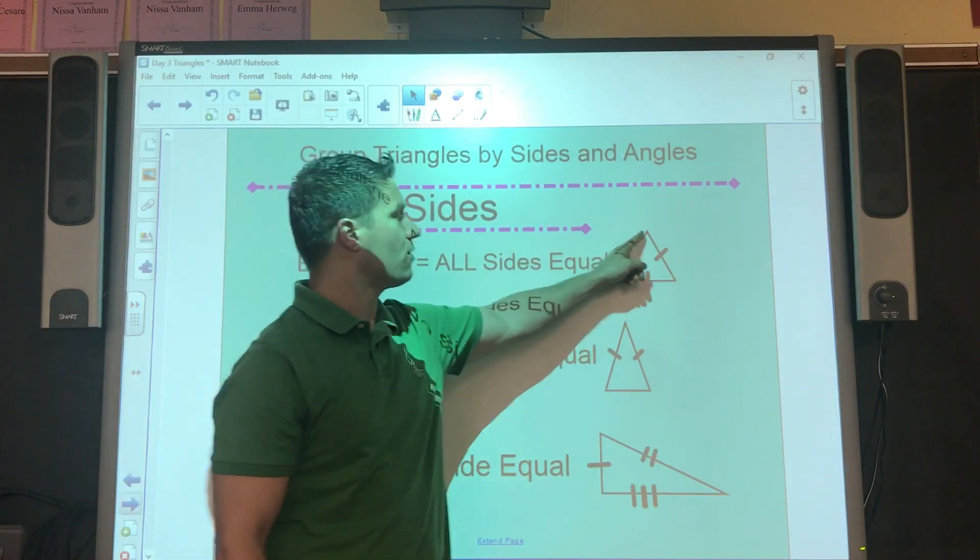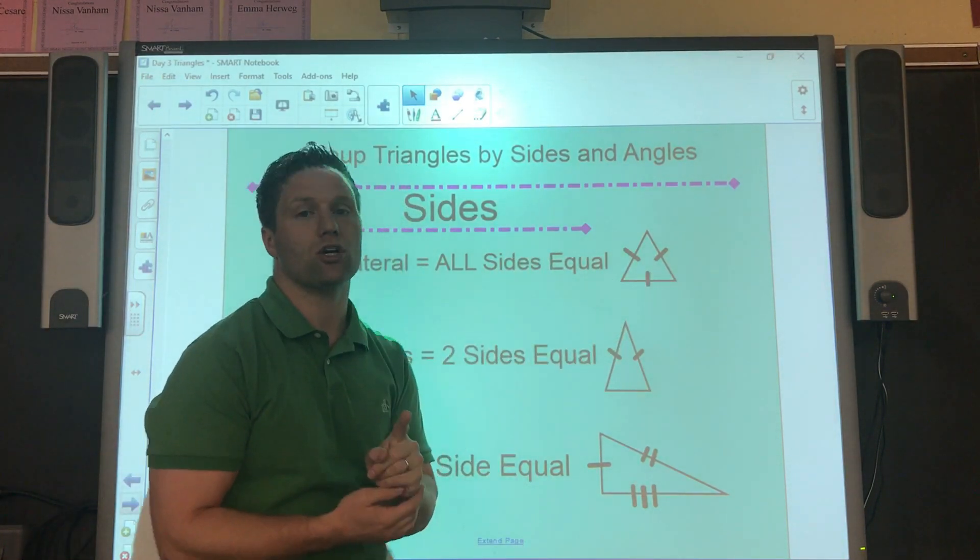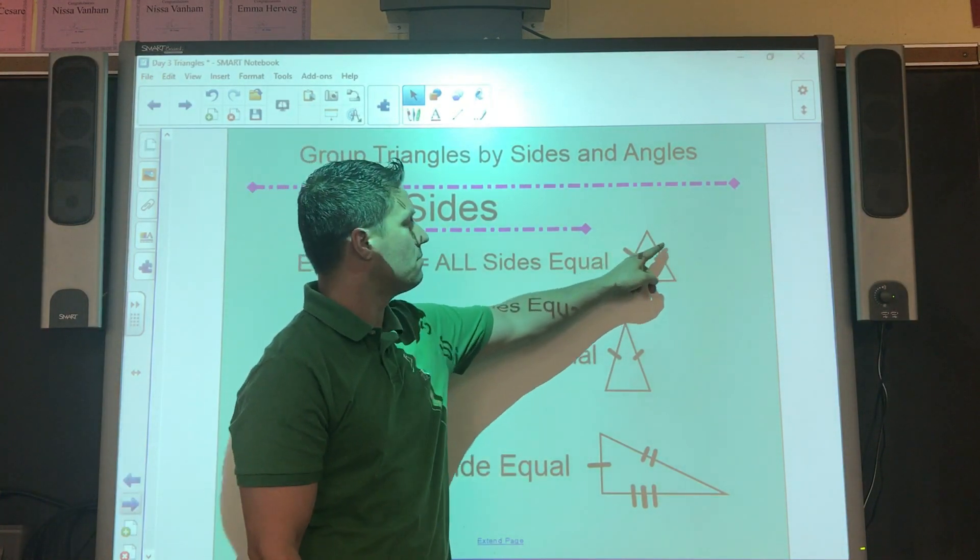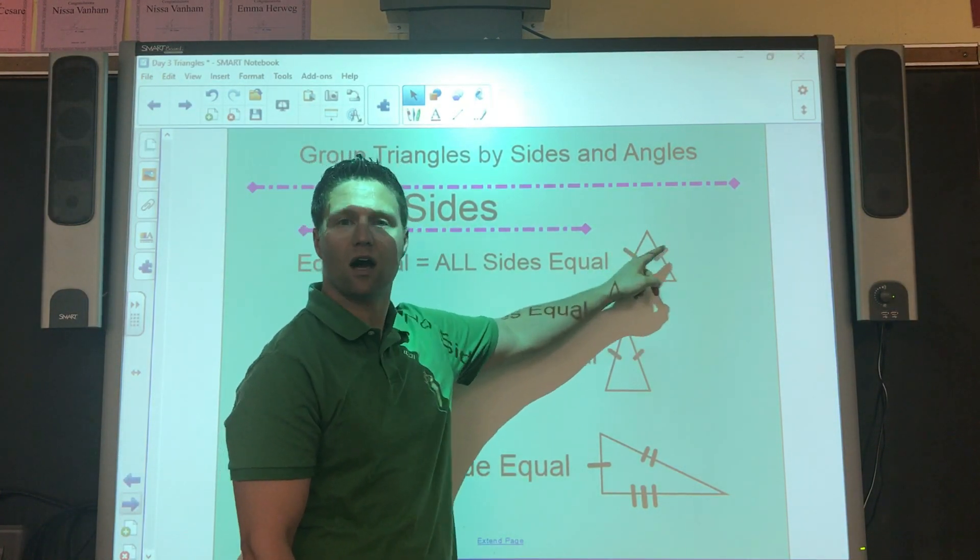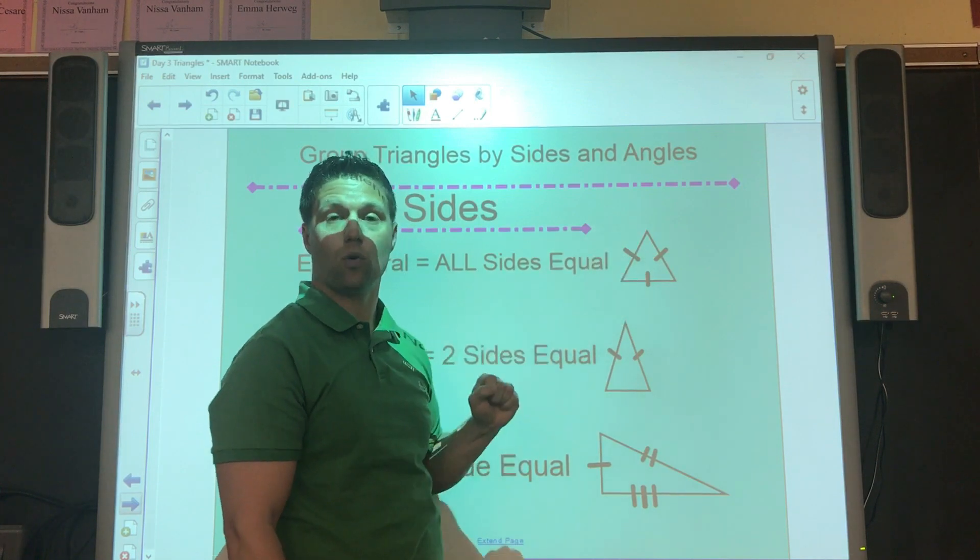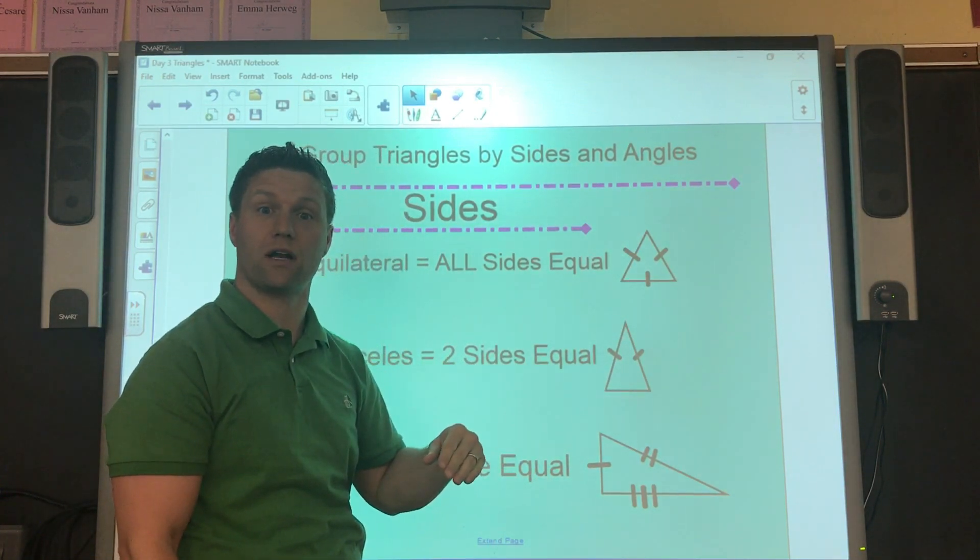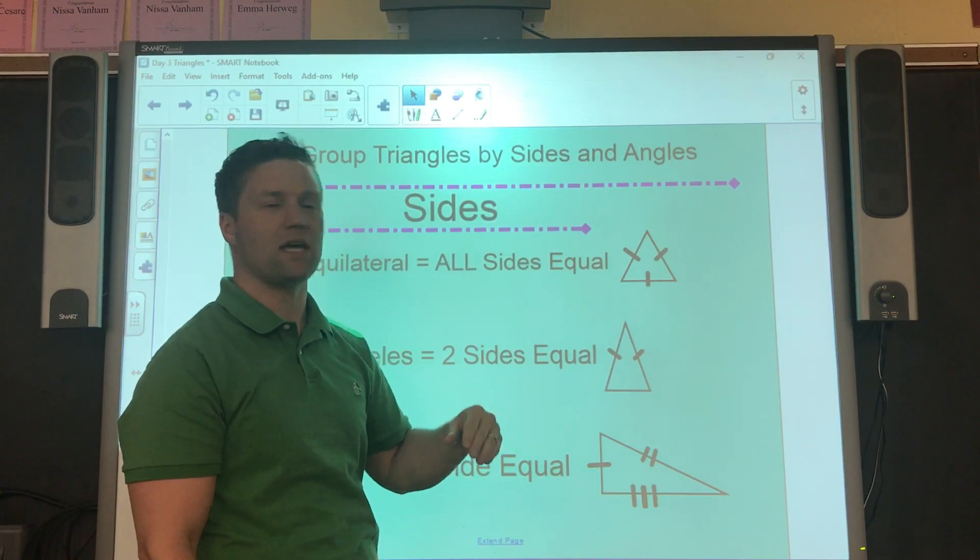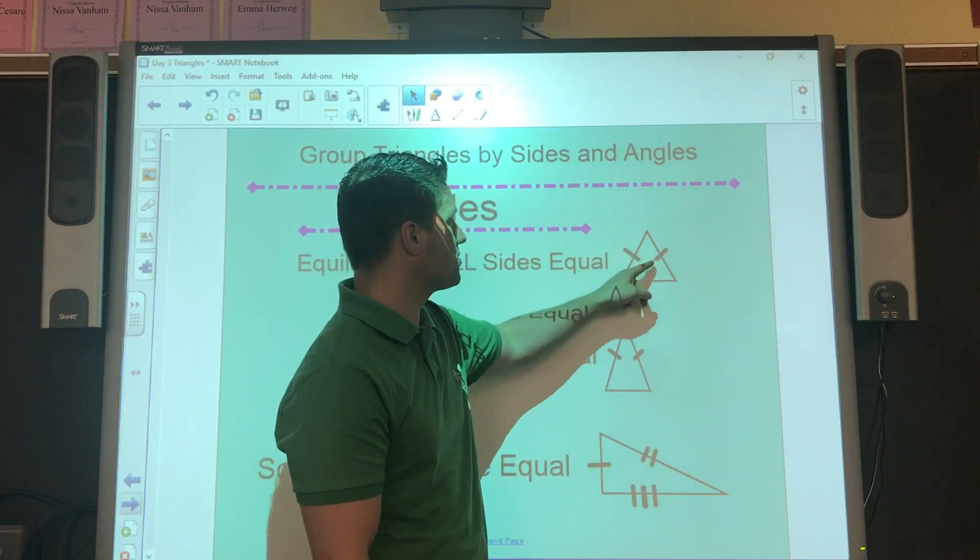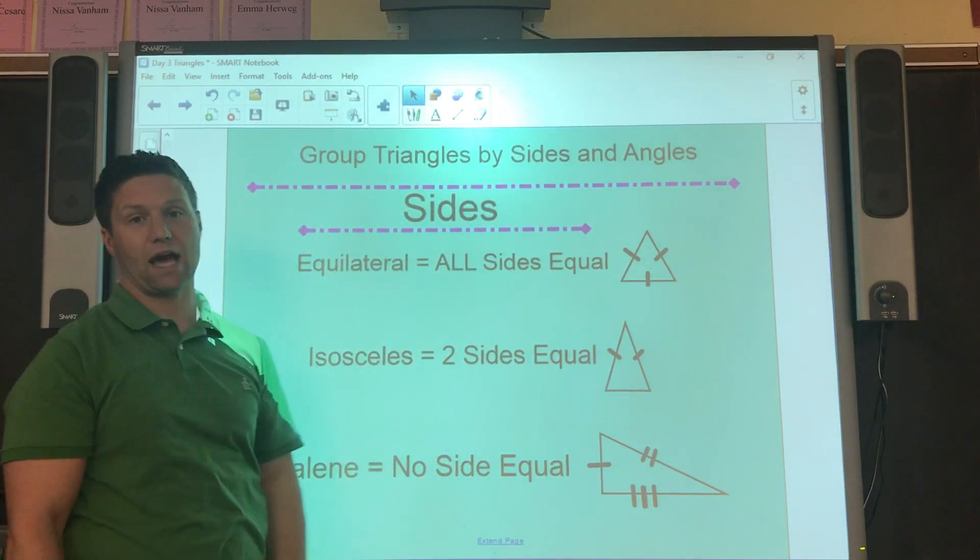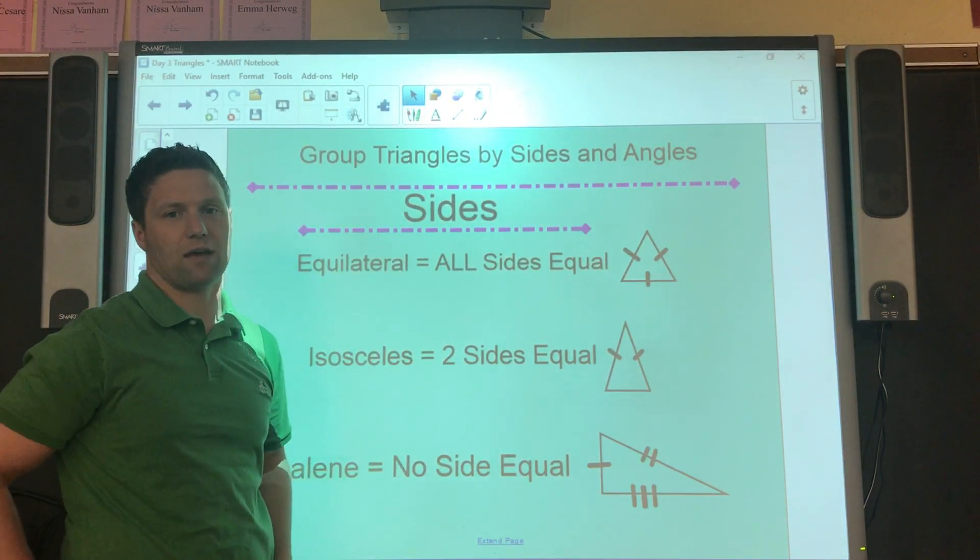And it looks like they're all equal from the triangle, but to make sure that it definitely is, what they do is they use these little tick marks. These little marks on there. Now, if it has just one mark, any other side that has just that one mark on it as well means that it's going to be equal to it. So this has one, this has one, this has one. So that means they're all the same. So that's equilateral. All sides are the same.